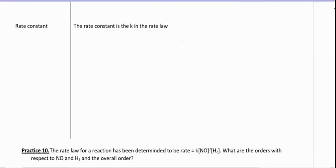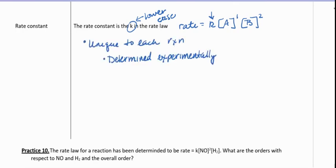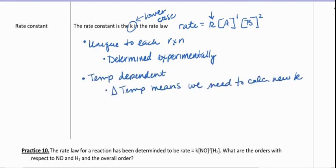The rate constant is the K in the rate law expression — rate equals K times the concentration of a reactant raised to an order, times the concentration of another reactant raised to another order. This K is always written lowercase, as there is a capital K used in other applications. There are several things to know about the rate constant: they are unique to each reaction and must be determined experimentally by collecting data and graphing it. They are also temperature dependent, meaning if we change the temperature, we need to find a new K.